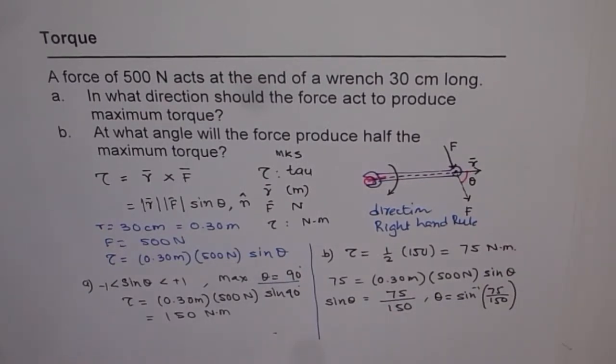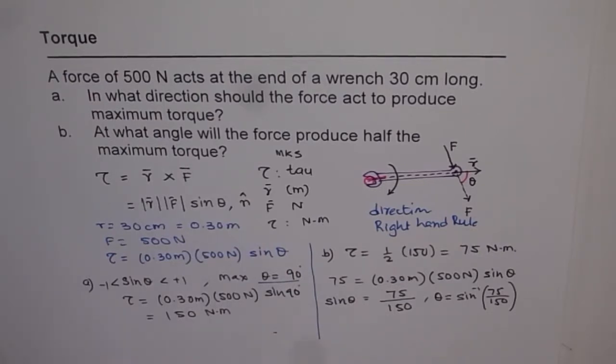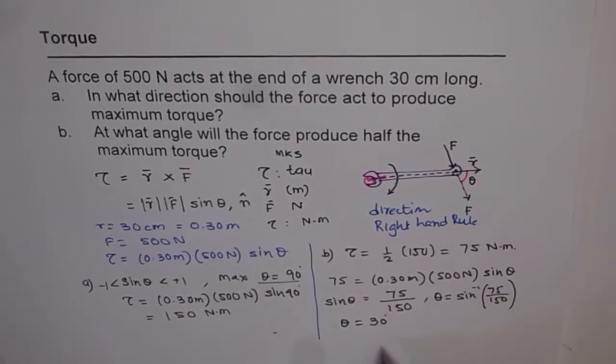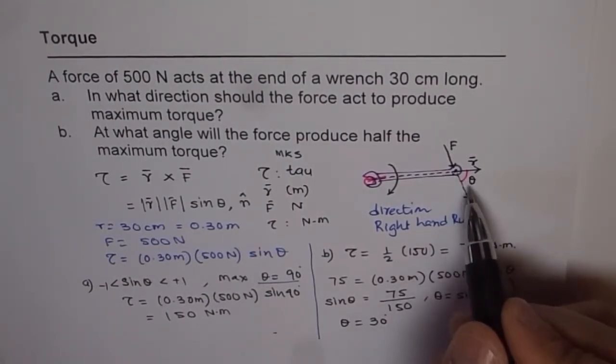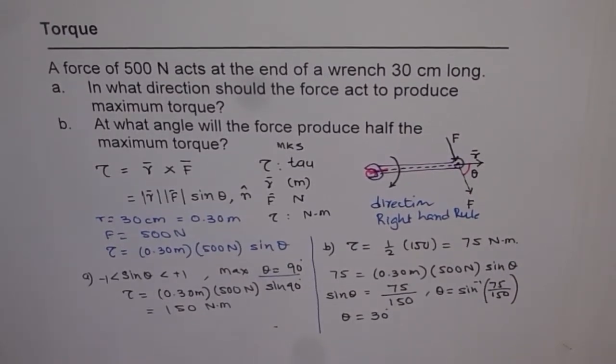I prefer not to solve them. They may be very easy, but we are using calculators. So let's use calculator. We do second function sine inverse within brackets 75 divided by 150 bracket close equals to 30 degrees. So we get theta equals to 30 degrees. If this theta is 30 degrees, then the effect of the force will be half as far as the torque is concerned.